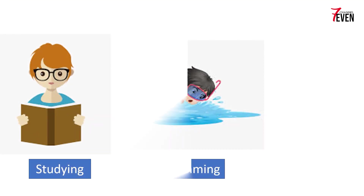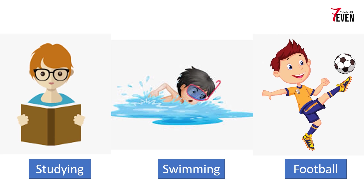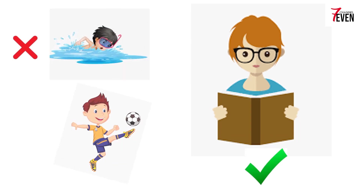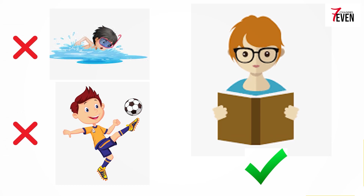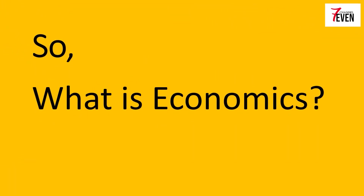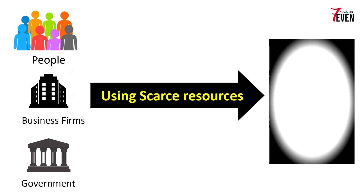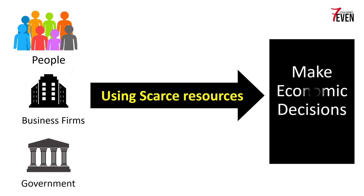Time is another example of scarce resources. You want to do studies, swim, or play soccer, but you can't do all of those at the same time — there are only 24 hours per day. If you choose one thing you have to sacrifice the others. If you choose to do studies, then you cannot swim or play soccer at the same time. So economics is the study of how people, business firms, and governments make decisions by using scarce resources.